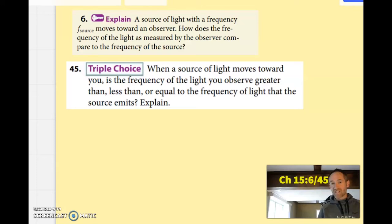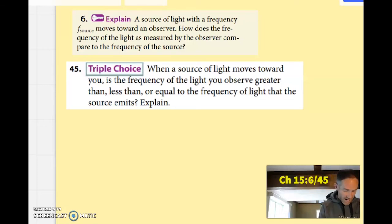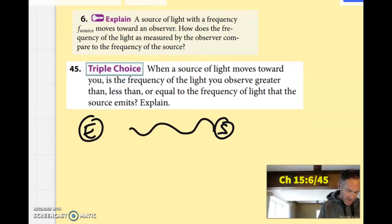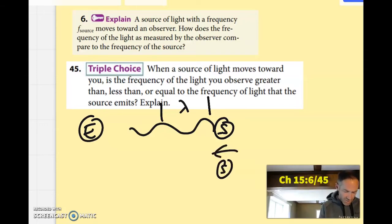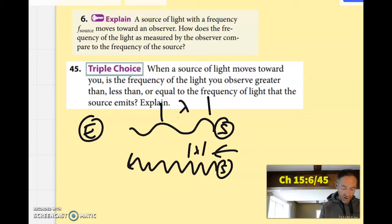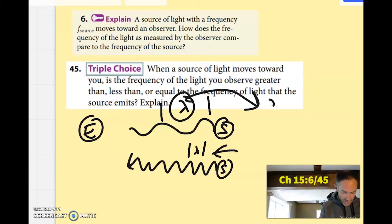Number six and number 45 are essentially the same thing, so let's do them together. It says the source of light with frequency f_s moves towards an observer — how does the frequency of light measured by the observer compare to the frequency that was produced? We know it's going to be higher. Here's the Earth and here's something that produces light. If it's not moving towards you, the light will have a certain wavelength and frequency. If the star is actually moving, the waves in front of it are going to get bunched up, the wavelength is going to be small, and any time the wavelength is small, the frequency is large because the two multiply to the speed of light. So the big wavelength is coupled with a smaller frequency, and the small wavelength is coupled with a bigger frequency.